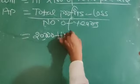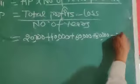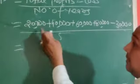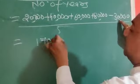40,000 plus 60,000 plus 80,000 minus 30,000 divided by 5. The total comes to 170,000.